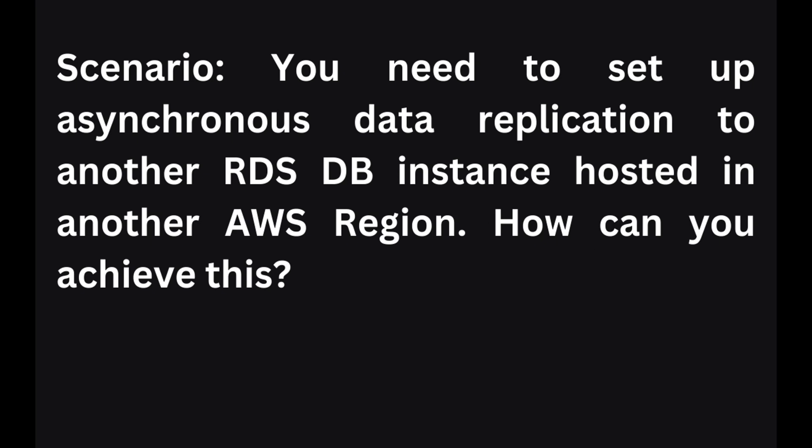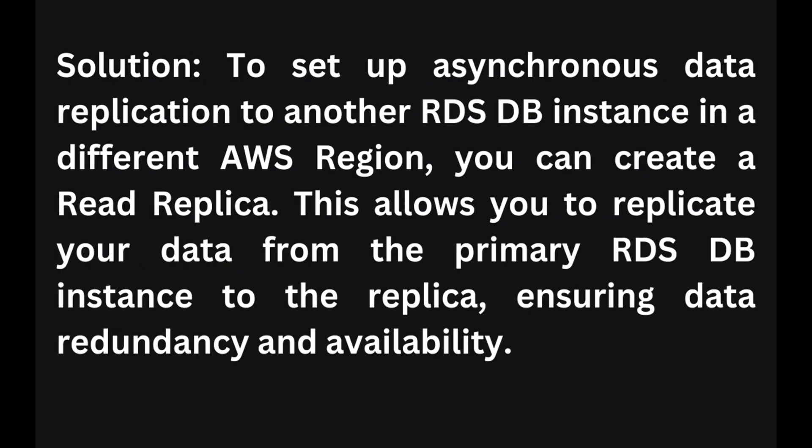In the first scenario, you need to set up asynchronous data replication to another RDS database instance hosted in another AWS region. The solution is to create a read replica. This allows you to replicate your data from a primary RDS database instance to the replica, ensuring data redundancy and availability.